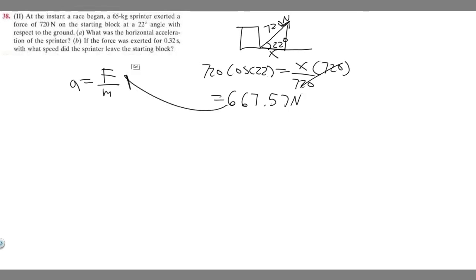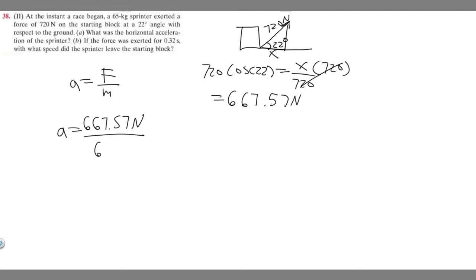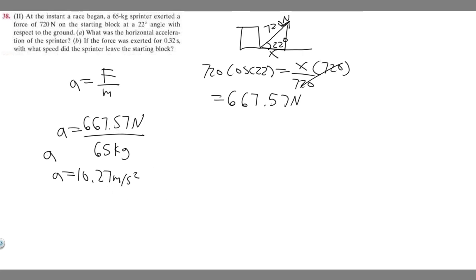Now that we have the horizontal force, we can find the horizontal acceleration. We take 667.57 newtons divided by our mass of 65 kilograms. Doing this calculation — 667.57 divided by 65 — we get about 10.27 meters per second squared. Since we're using newtons and kilograms, the units are meters per second squared. This is our answer to Part A.